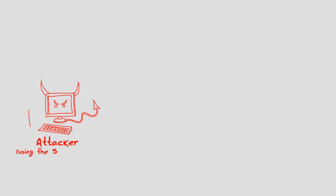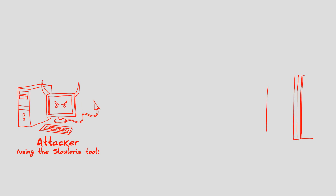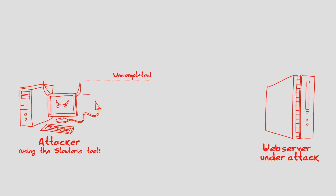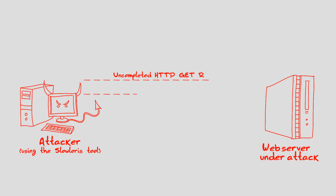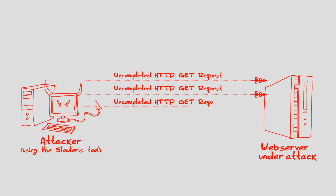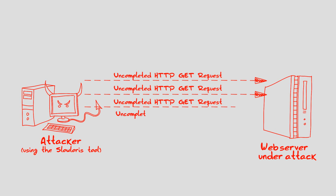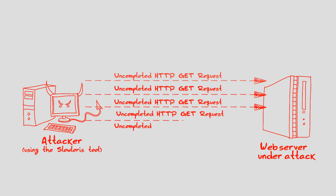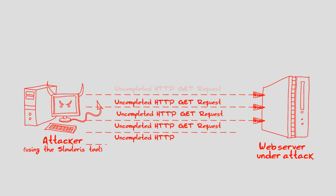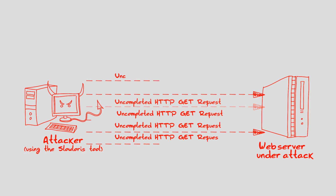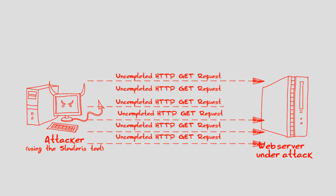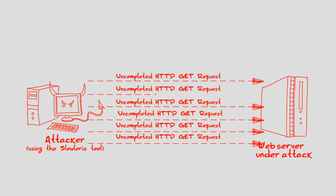However, when an attacker is using the Slow Loris tool, the HTTP request is sent without the termination sequence. This causes the web server to leave the connection open and to allocate resources that are waiting for the termination sequence. The typical web server allocates limited resources for handling open connections, as it expects the connections to be short and terminated quickly.